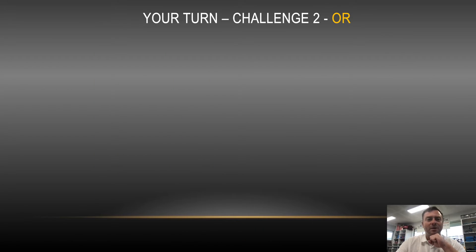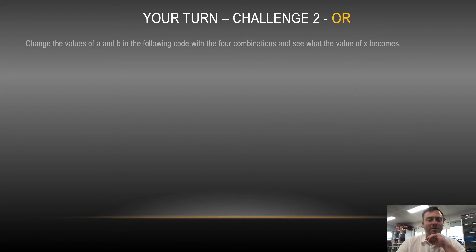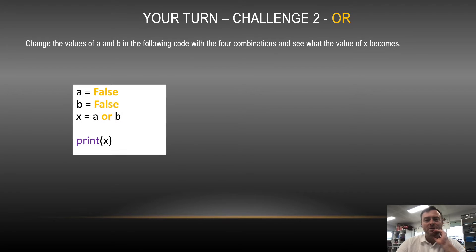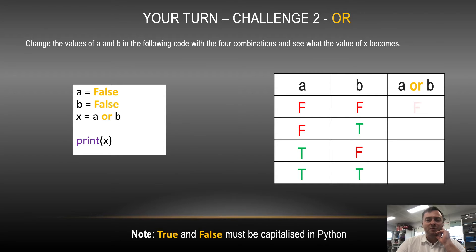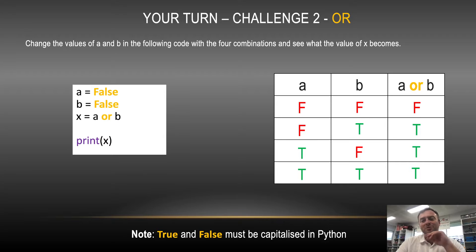So now in Python, try and build this little bit of code, change the values, and put them in the little table to see what happens. You would have gone FALSE FALSE, FALSE TRUE, TRUE FALSE, and then TRUE TRUE. Hopefully when you did it: FALSE FALSE was FALSE, FALSE TRUE gave you TRUE, TRUE FALSE gave you TRUE, and then TRUE TRUE gave you TRUE. What you should find here — the unique case as opposed to AND — is when they're all false, and then the circuit doesn't complete.